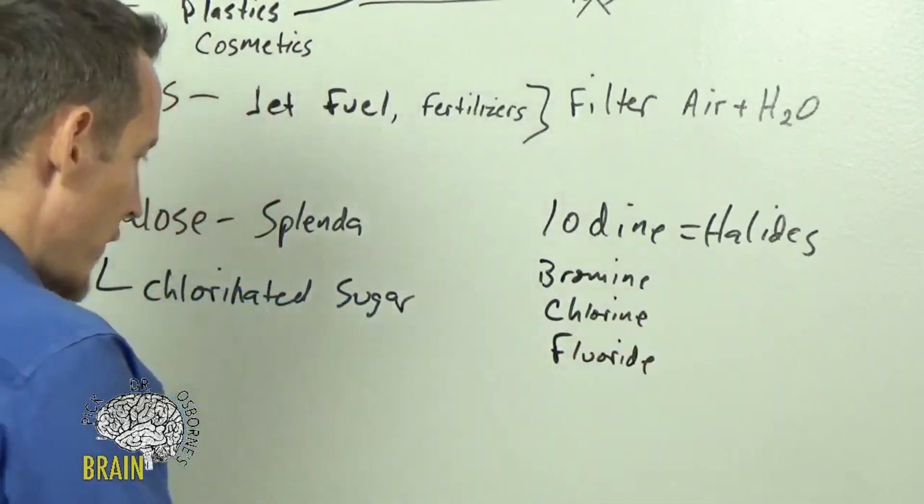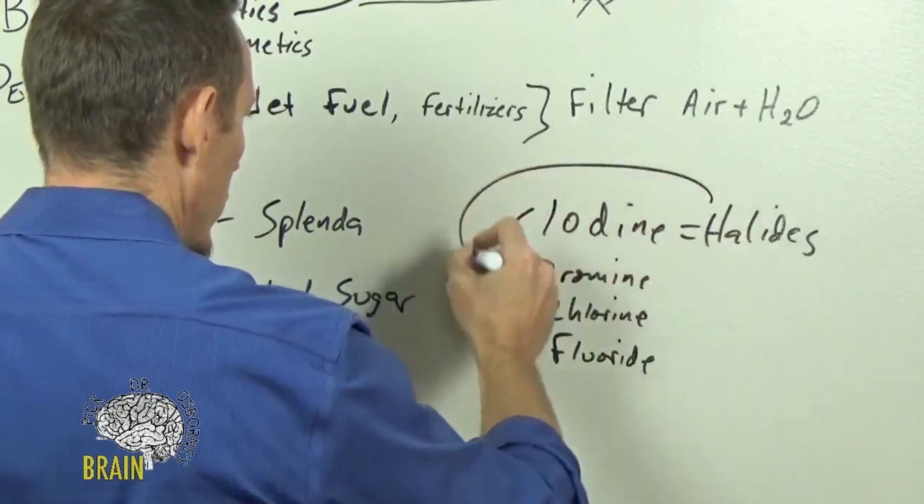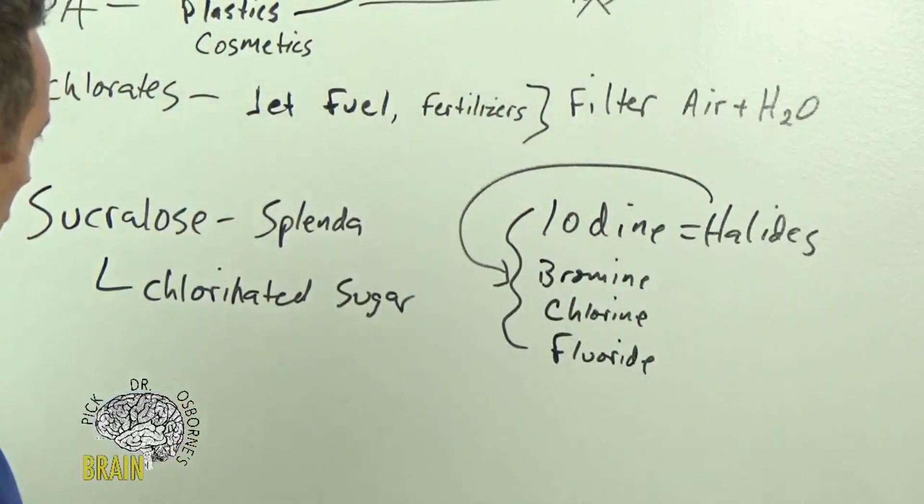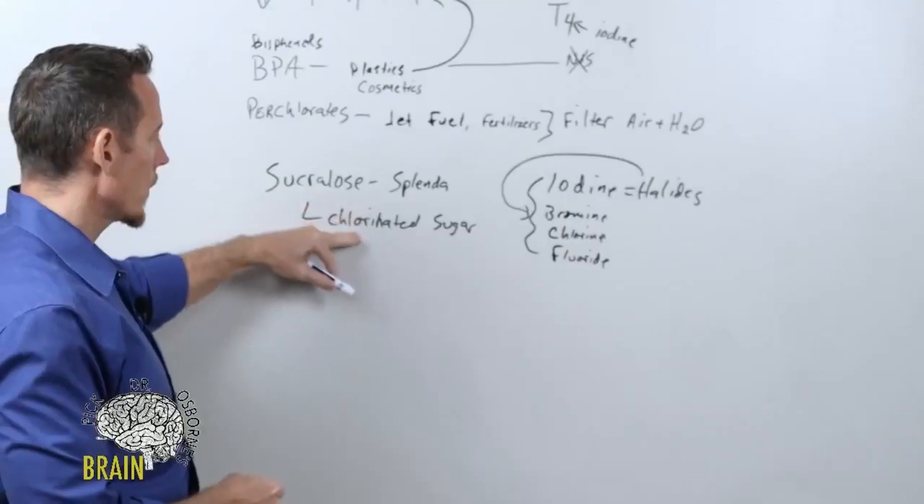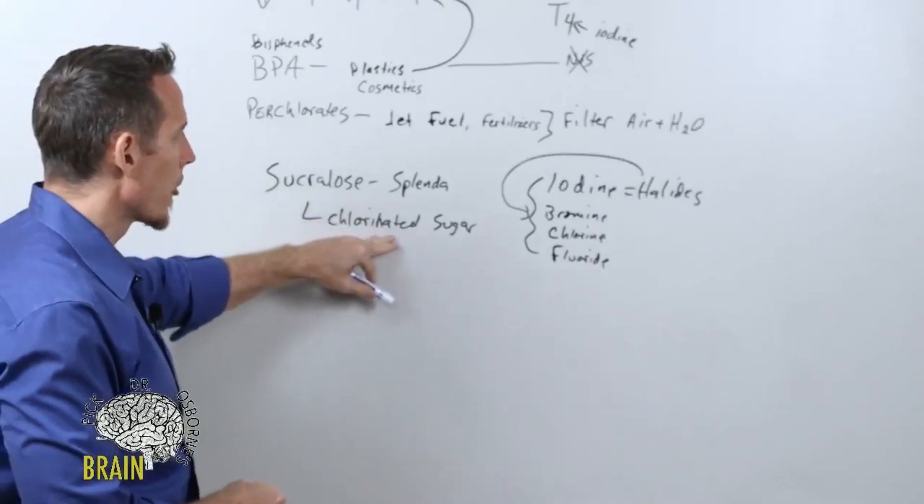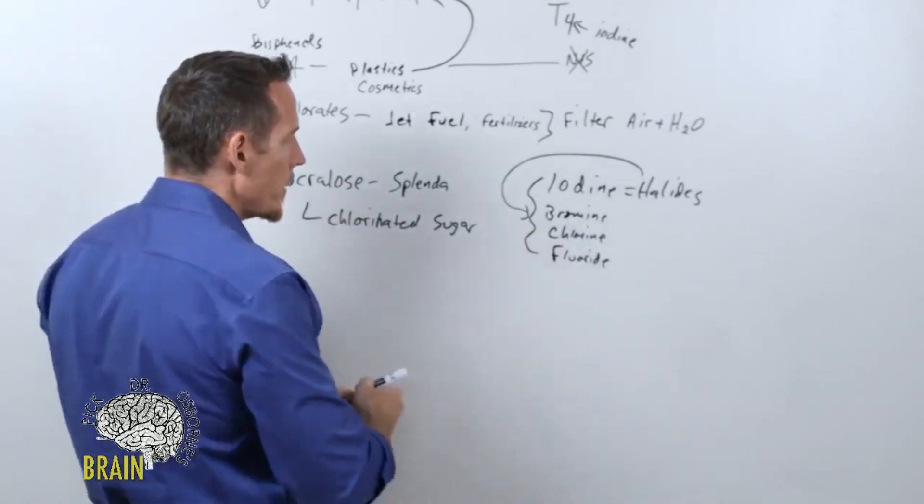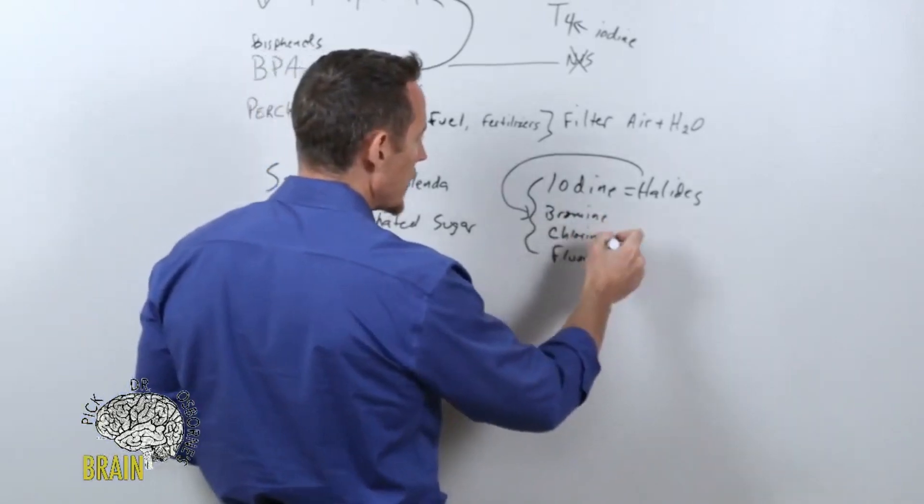Going back to this research study on Splenda and sucralose, chlorinated sugar—the chlorine, as I mentioned, is a halide. Understand that bromine, chlorine, and fluoride compete for uptake.